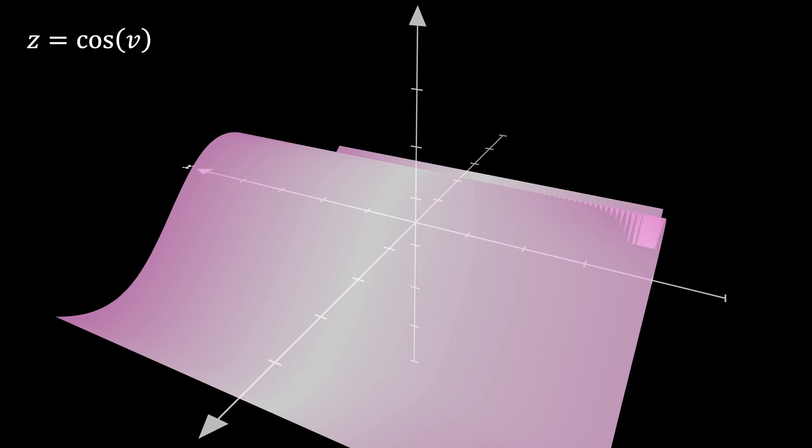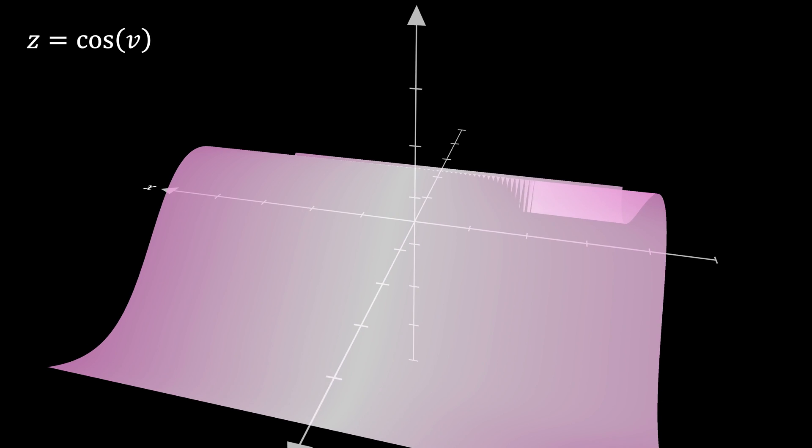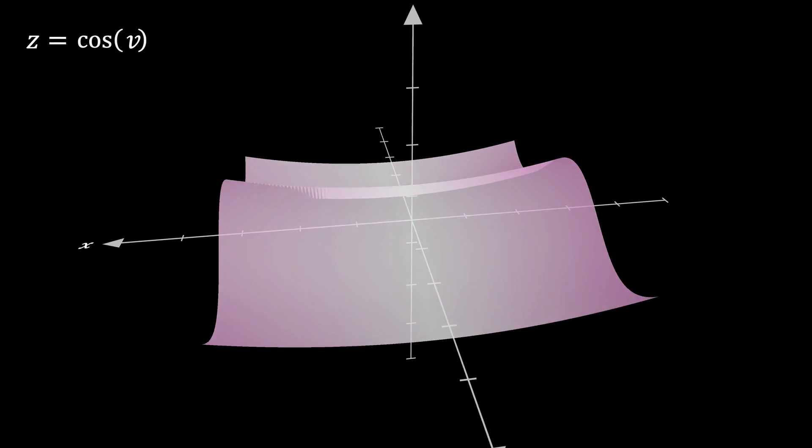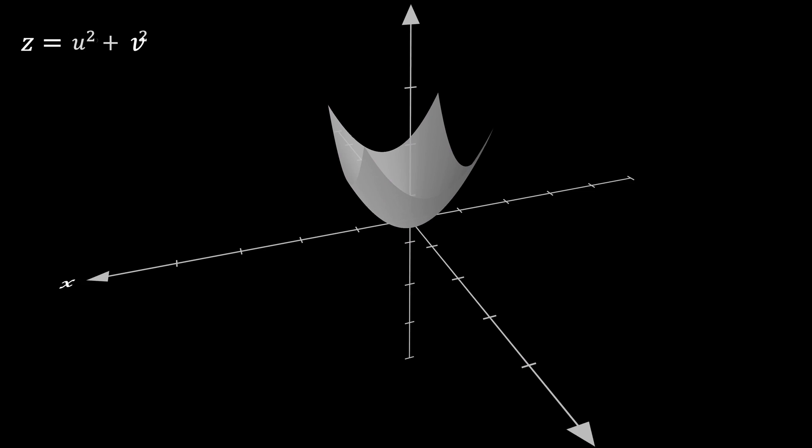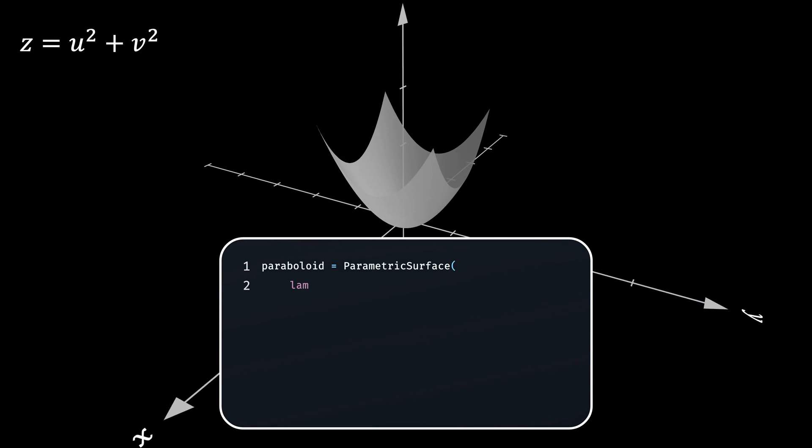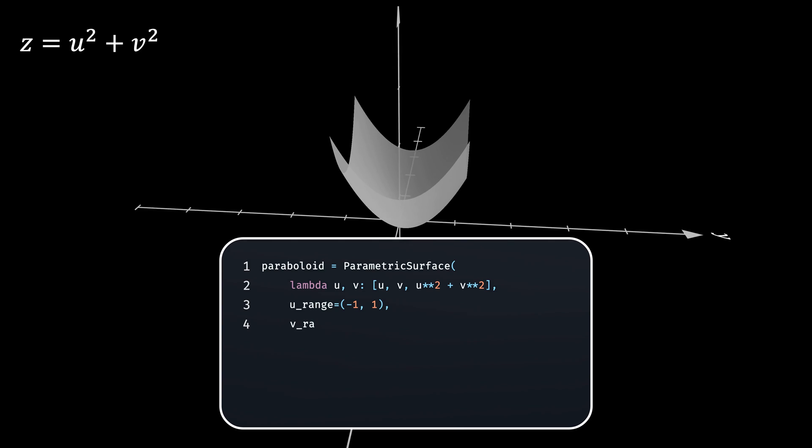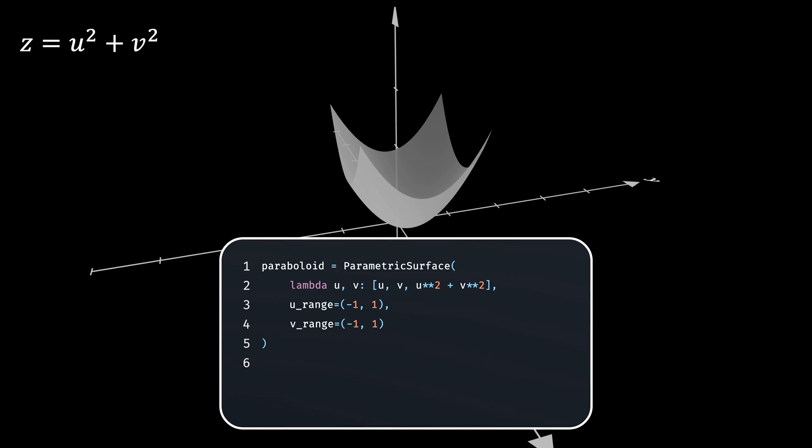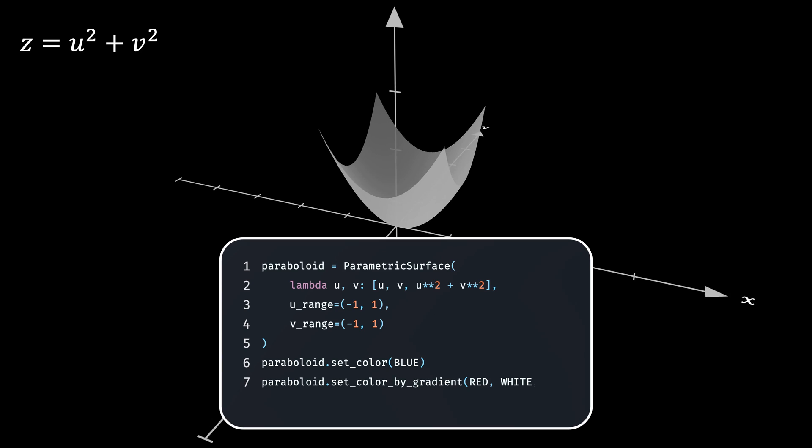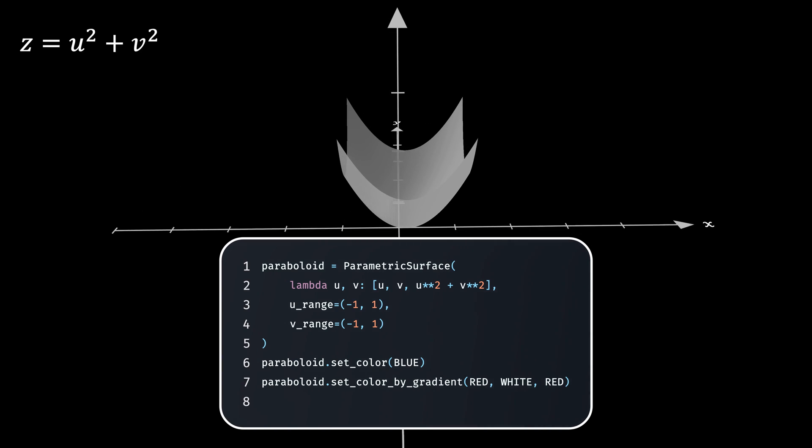Moving on with the same logic, we can use both the parameters to modify the Z coordinate. For instance, I can create a paraboloid by simply defining the Z coordinate to be U square plus V square. But that doesn't look so appealing, right? Let's spice things up by adding some color. We can always use the setColor method or even setColorByGradient method to colorize the surface.